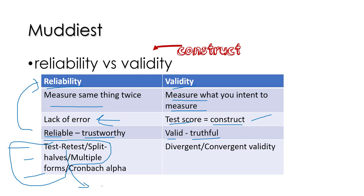In test-retest reliability, you give somebody the test, wait an appropriate amount of time, give them the test again, and then correlate the scores of the two administrations. Another way to measure reliability is Cronbach's Alpha, which is purely statistical. One way to measure construct validity is through divergent and convergent validity.